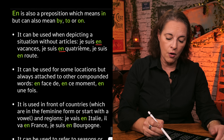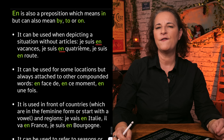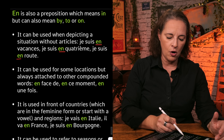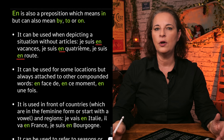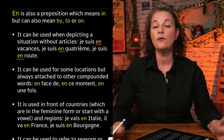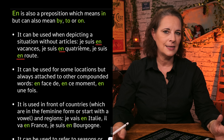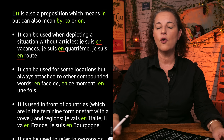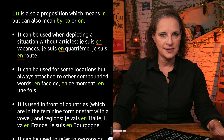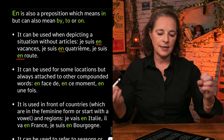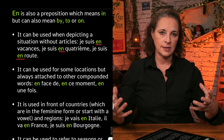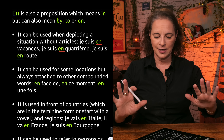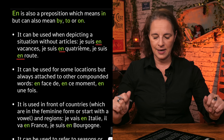Je suis en quatrième — I am in fourth grade. Je suis en route — I am on my way, on the road. But here it doesn't have an article after that. You would not say en la, en le, en des — it doesn't exist. So that depicts a situation without article: I am on holiday, I am on the road, I am in fourth grade, and so on.